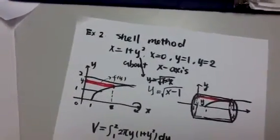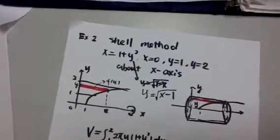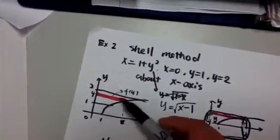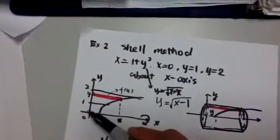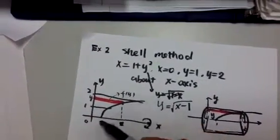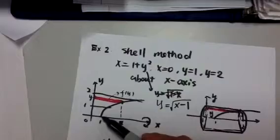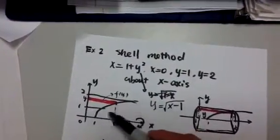So y equals square root of x subtract 1 is a curve something like this. Because the square root of x is just a curve like that, and you have to shift to the right one unit. So it's a curve like this.